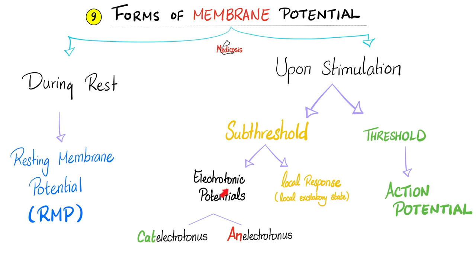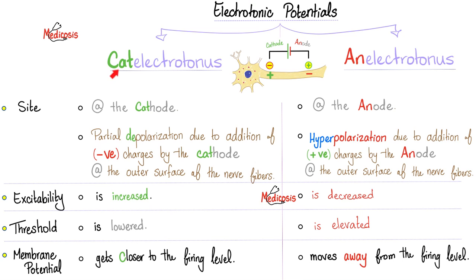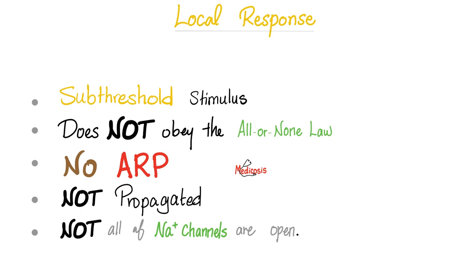Subthreshold can give you electrotonic potential such as catelectrotonus and anelectrotonus. All of these are called non-propagated potential. Catelectrotonus is at the cathode and there is increased nerve excitability. Anelectrotonus at the anode, there is decreased nerve excitability. Of course, if the excitability is low, it means the threshold is high. But if the excitability is high, it means the threshold is lowered. Local response. Subthreshold stimulus does not obey the all or none law. No absolute refractory period, not propagated, and not all of your sodium channels are open.